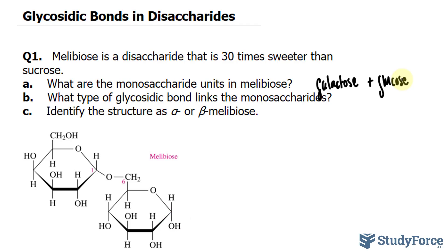For question B, what type of glycosidic bond links the monosaccharides? It's important to mention that in disaccharides, there are four different types of glycosidic bonds: 1,2-beta; 1,4-beta; 1,4-alpha; and 1,6-alpha. The bond occurs at 1 and 6, so we know that it is a 1,6-glycosidic bond, although we have to determine whether it's alpha or beta. Notice that the anomeric carbon — the one that determines whether a monomer is alpha or beta — has the OH pointing downwards, and when it points downwards, we call it alpha.